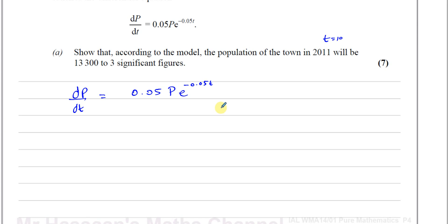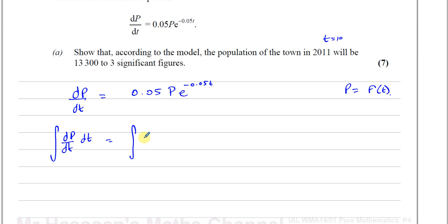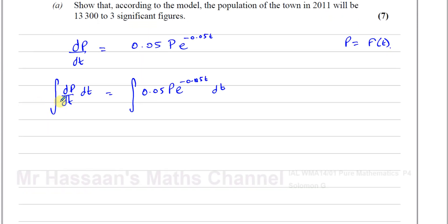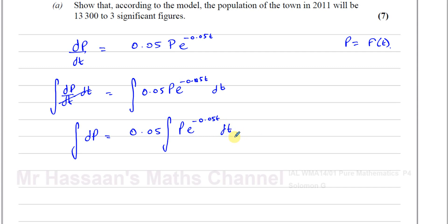To solve differential equations, we must get rid of the differential dp/dt. We want to end up with p equals some function of t. To do that, we integrate both sides with respect to t — that gets rid of the dt. So dp/dt integrated with respect to t, and on the right side I integrate 0.05 times p times e to the power of negative 0.05t with respect to t. I can cancel the dt terms and write the constant 0.05 outside the integral of p times e to the power of negative 0.05t with respect to t.